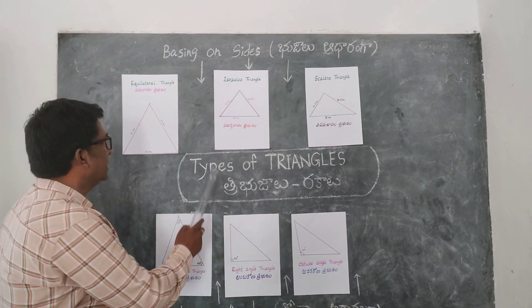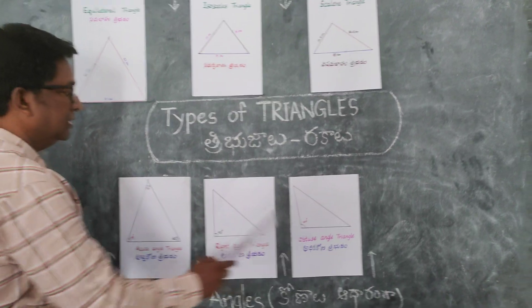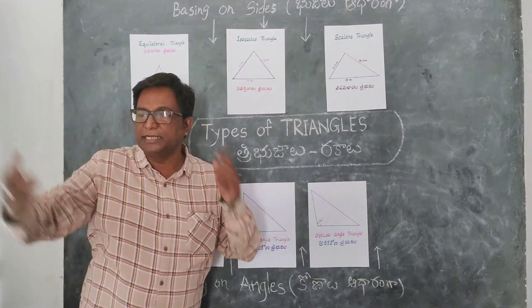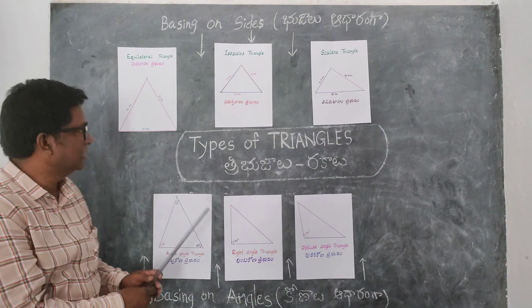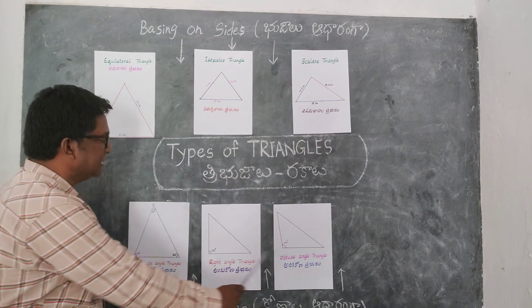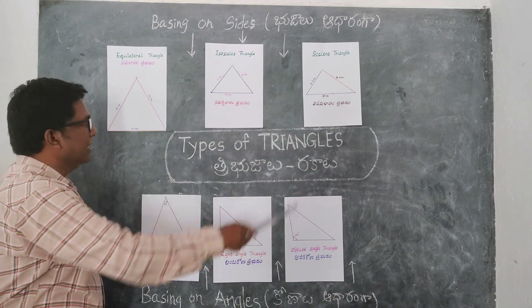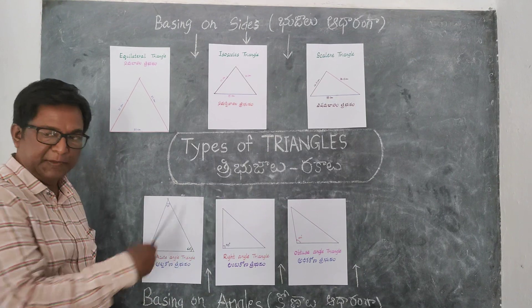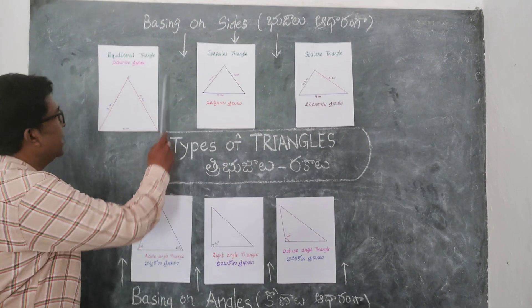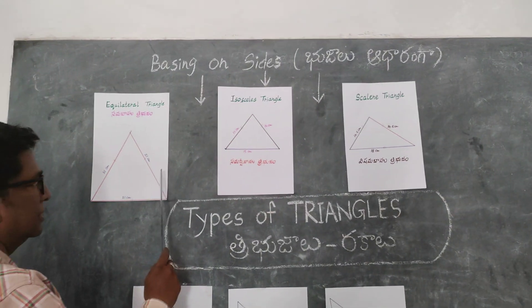Let's sing with me. Triangles, triangles, triangles. Let's sing about the triangles. Basing on sides and angles. Triangles are different types. Basing on sides, basing on sides.